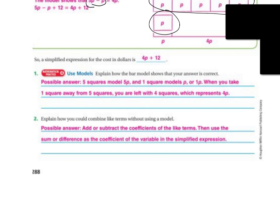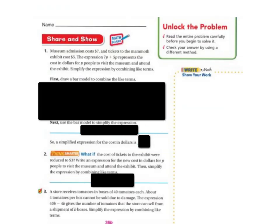So you don't have to draw a bar model. So let's just say I have 4P plus 3P minus 12. So my like terms are 4P and 3P, and I'm adding them. 4 plus 3 is 7, so I'd have 7P minus 12. It's that easy. Let's do a couple more.